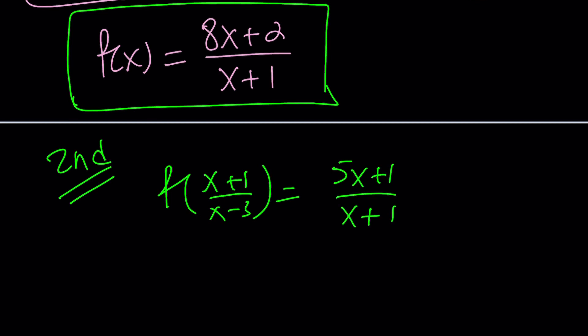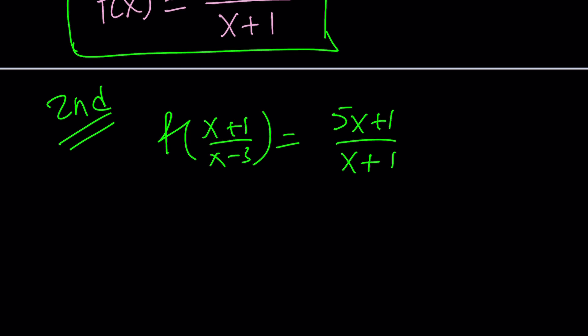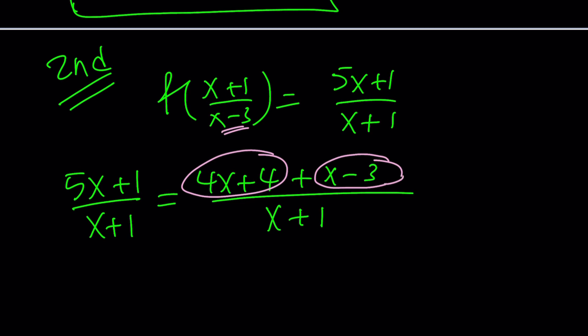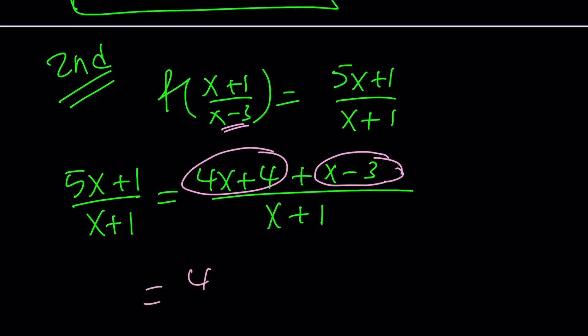So now for my second method, let me rewrite the original problem. This is the original problem. And I'm supposed to find f of x from here. So instead of setting it equal to a variable, let's just go ahead and manipulate the right-hand side. First of all, notice that the numerator can be written as 4x plus 4, which is a multiple of x plus 1, by the way, plus x minus 3. And why did I pick 4x plus 4? Because I wanted to have a multiple of x plus 1 and the remainder or the leftover, I want that to be this.